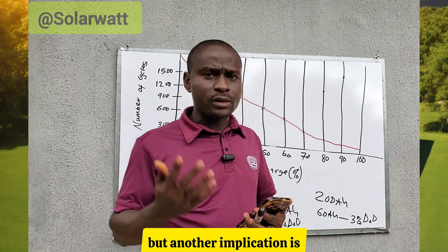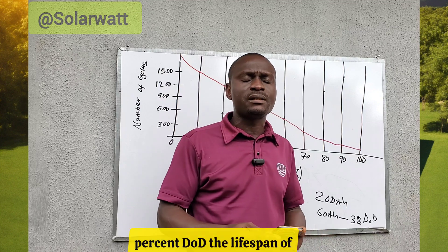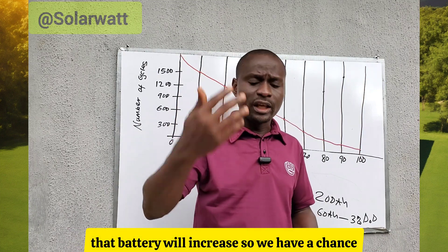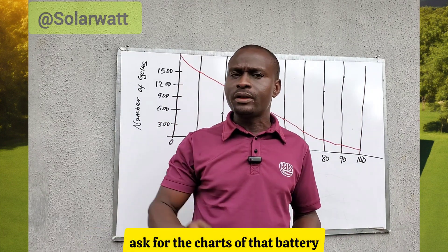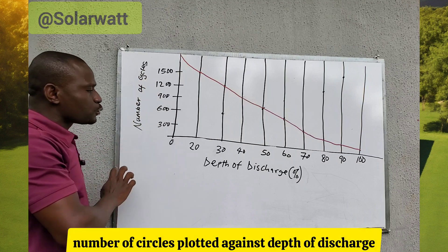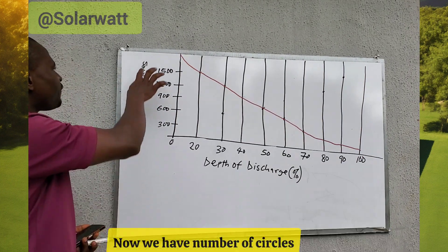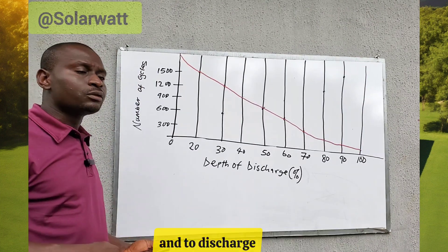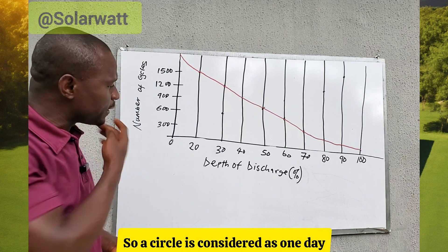Another important implication: when you deeply discharge a battery — using a high DoD of 50%, 60%, 70%, or 80% — the lifespan of that battery will be reduced. If the DoD is low, the lifespan will increase. Whenever you buy a battery, ask for the datasheet. Inside the datasheet you will find a graph of number of cycles plotted against depth of discharge. A cycle is the time it takes for a battery to charge and then discharge — one cycle equals one day.